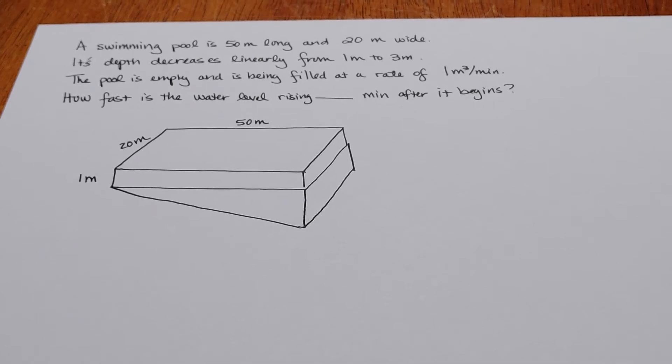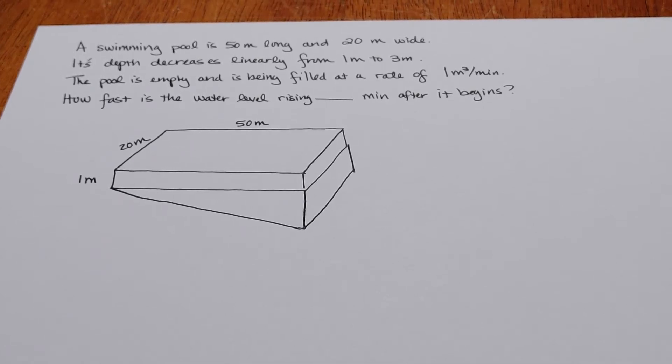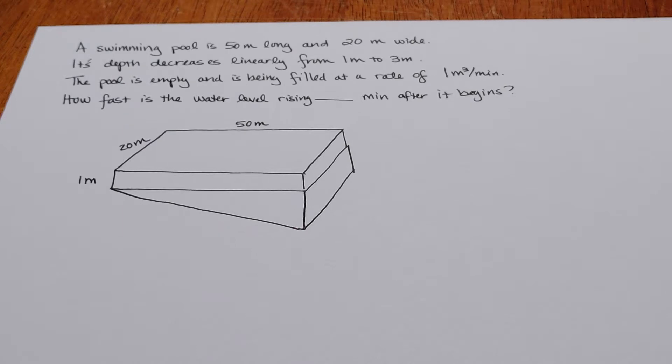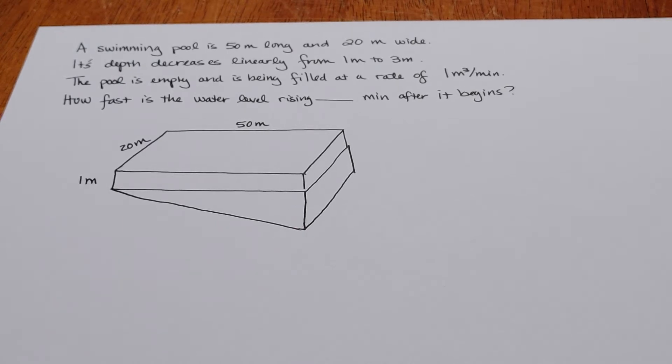In this video, I'm going to attempt to explain the swimming pool problem in our book. It says a swimming pool is 50 meters long and 20 meters wide.